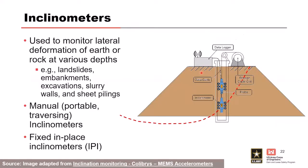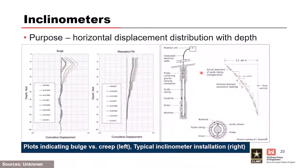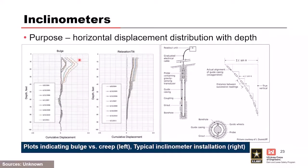Inclinometers can be read manually or automated. They give an idea of horizontal displacement distribution with depth. The left figure shows an example where the material is bulging at a certain location, which could be due to instability at that depth — perhaps an impending slide in an abutment or embankment. The center figure shows overall relaxation and tilt with no differential movement along this linear trend.